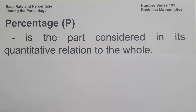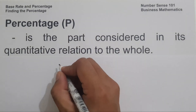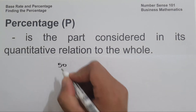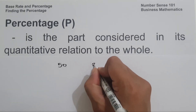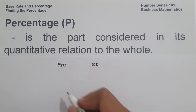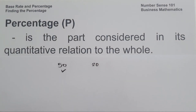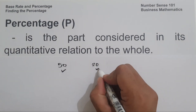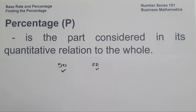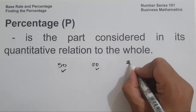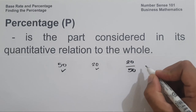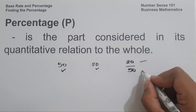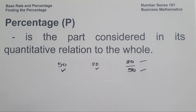For example, if we take 50 as the whole and 20 as a part, then the base is 50 and the percentage is 20, which is what we call the part. So the rate is 20 over 50 — 20 as the part and 50 as the base.